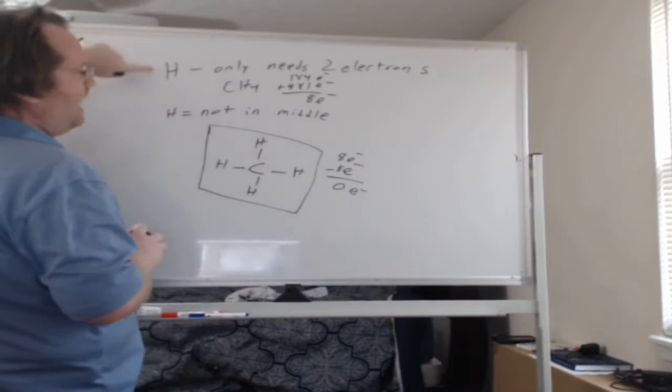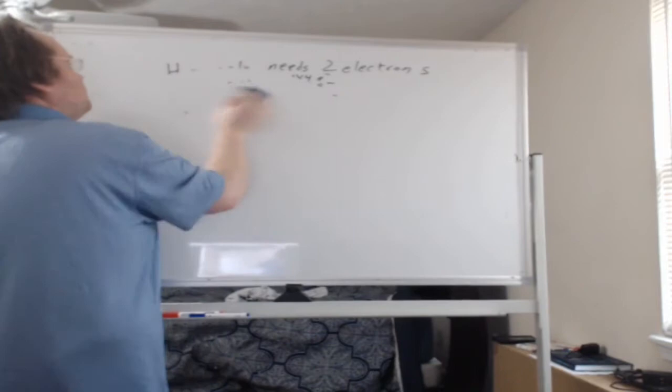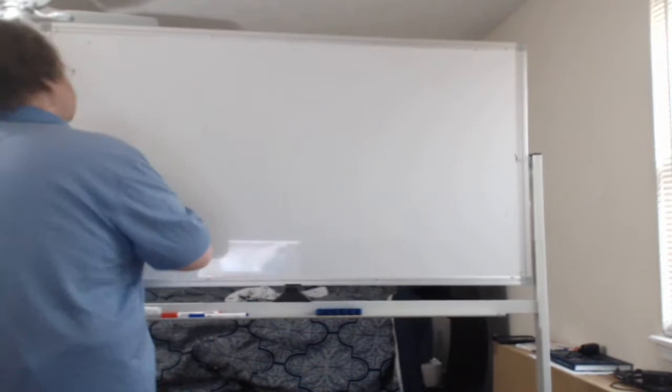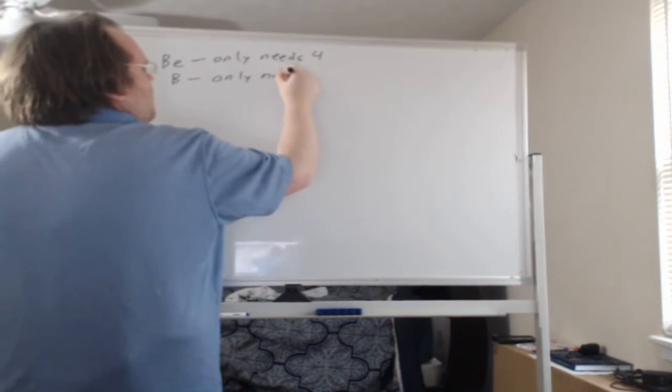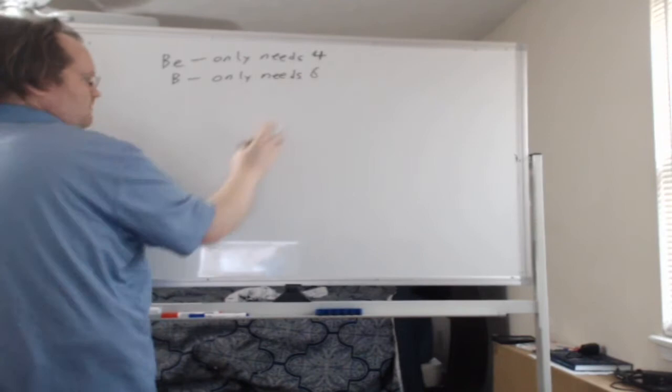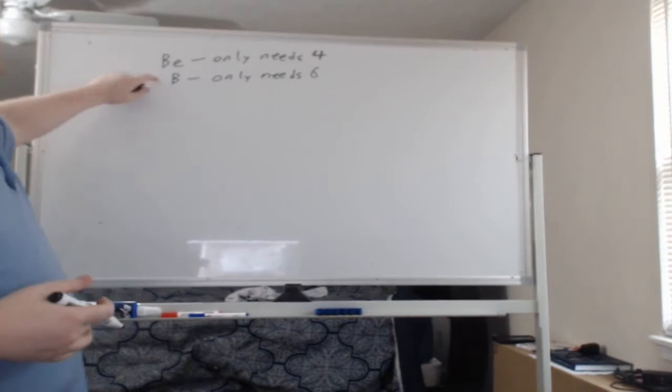Okay, so first rule, hydrogen only needs two electrons. I'm going to go over the other two exception rules and we'll do those next. So if you have beryllium, beryllium only needs four and boron only needs six. Now these won't come up quite as often and in this class we're not going to worry about the exact reason for this. We're just going to go with this is a rule and they come up enough that we want you to know it.